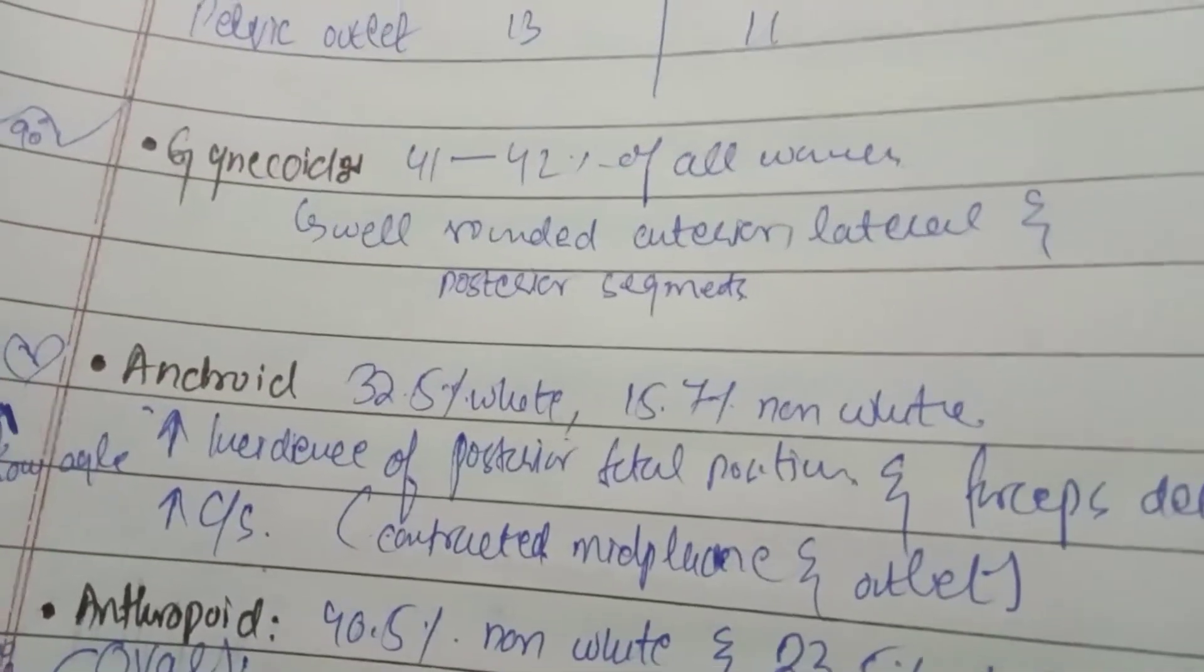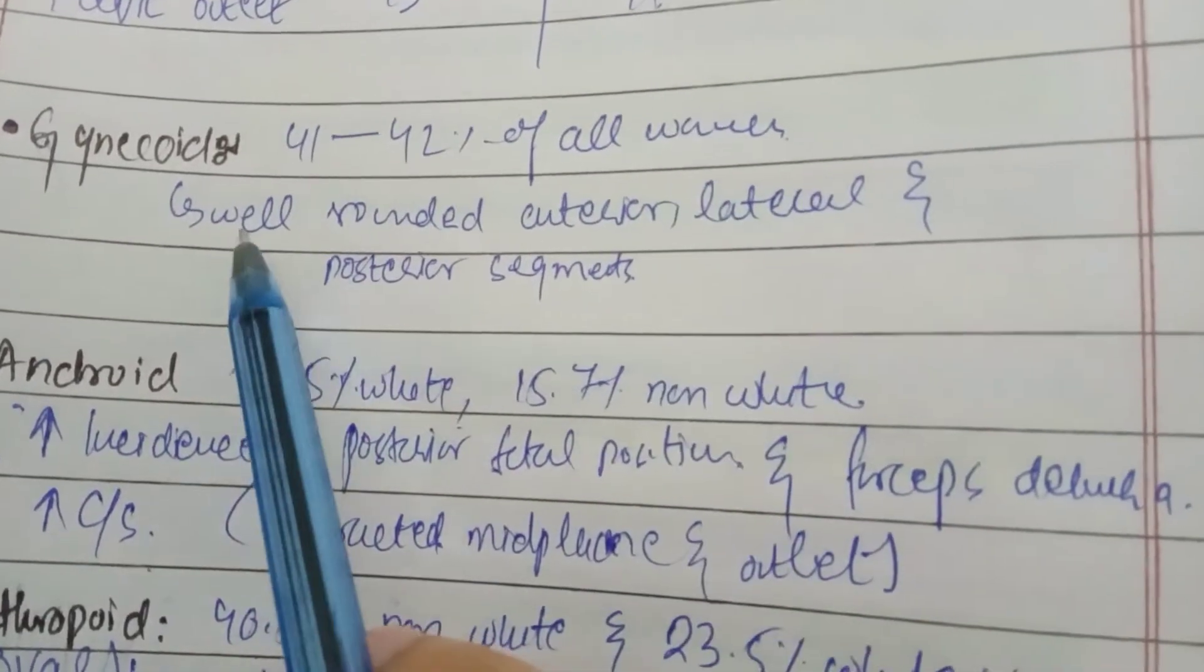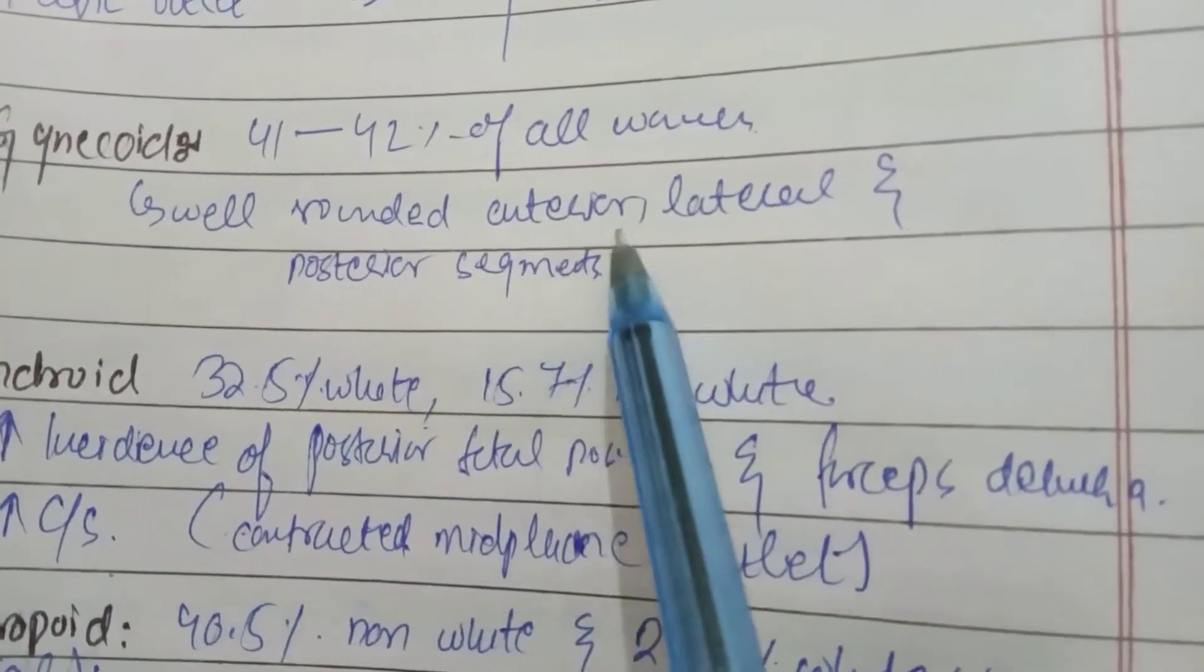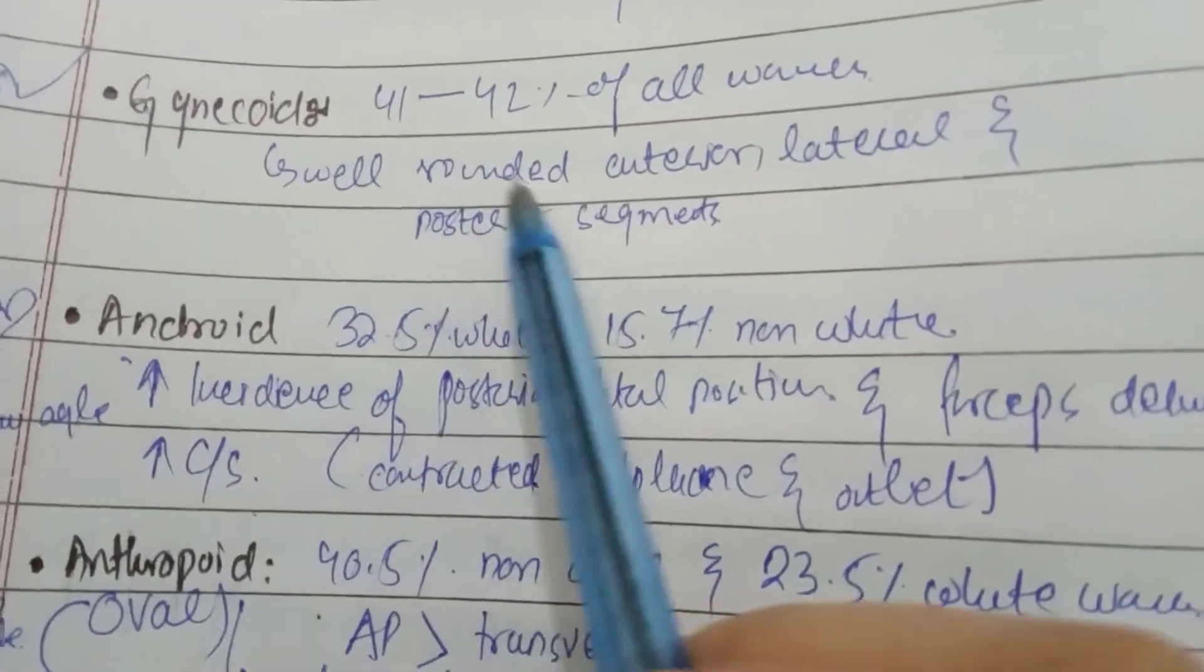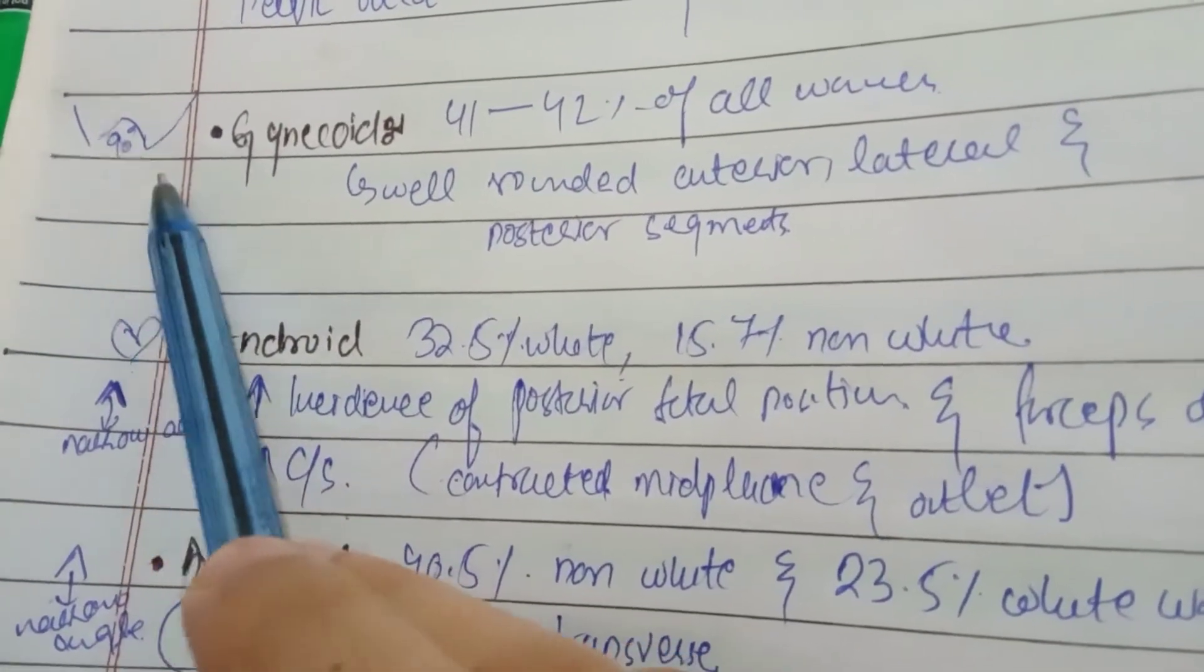This gynecoid is 41 to 42% of all women. Most common is well rounded anterior, lateral and posterior segments. Most favorable for pregnancy. And this sub-pubic angle is 90 degrees.